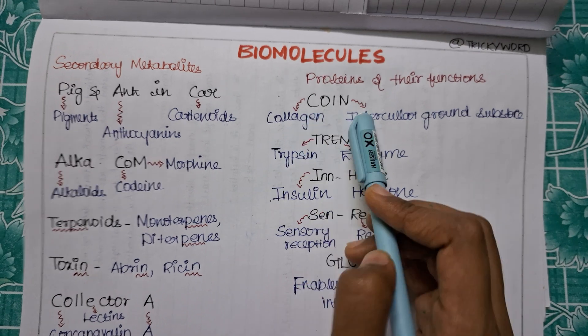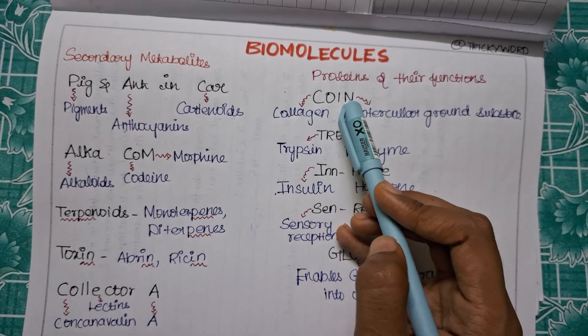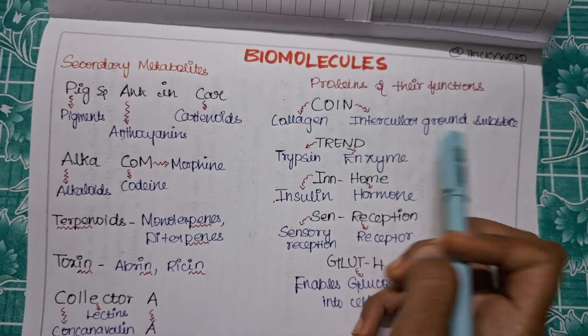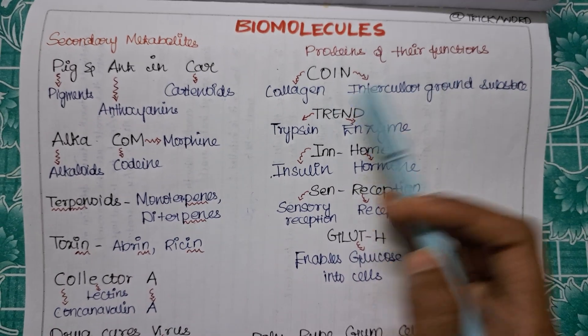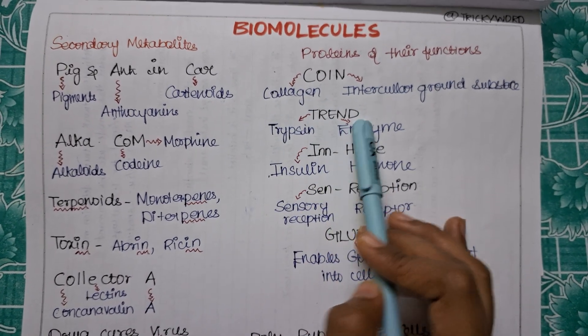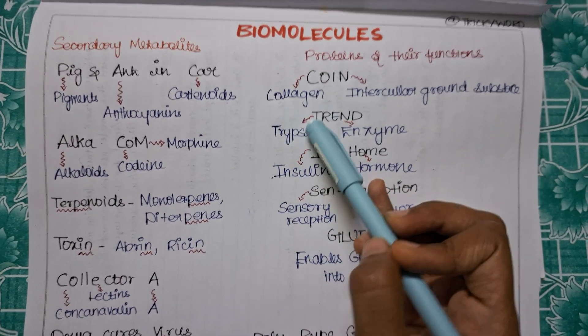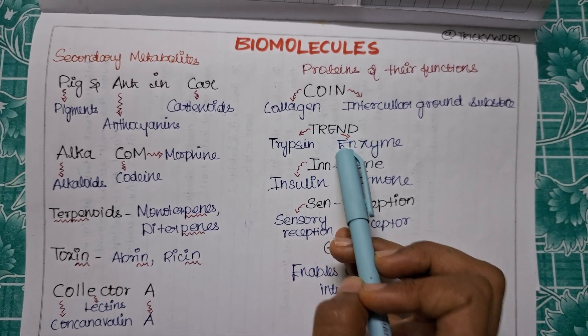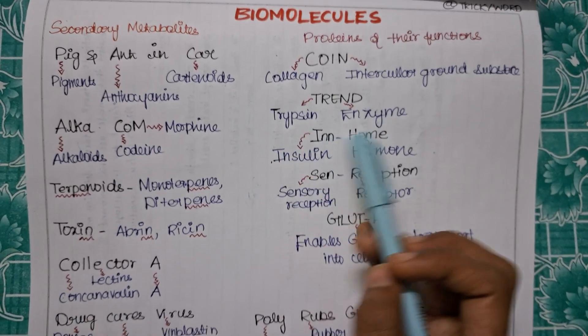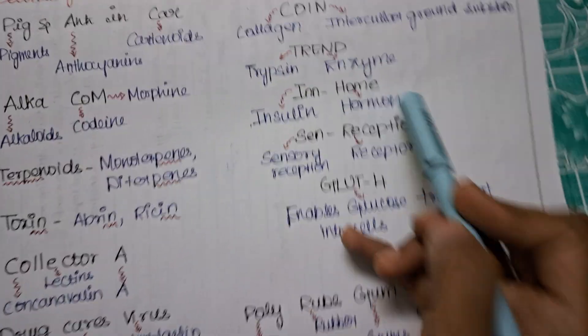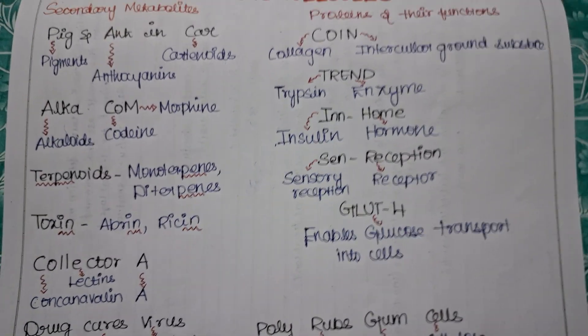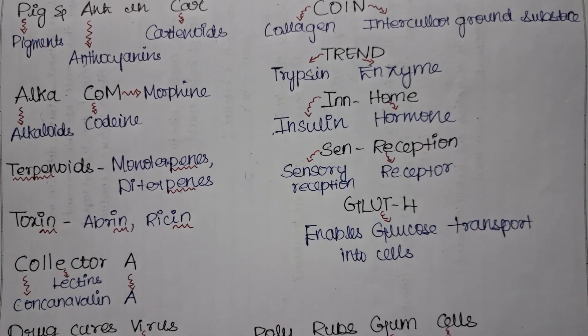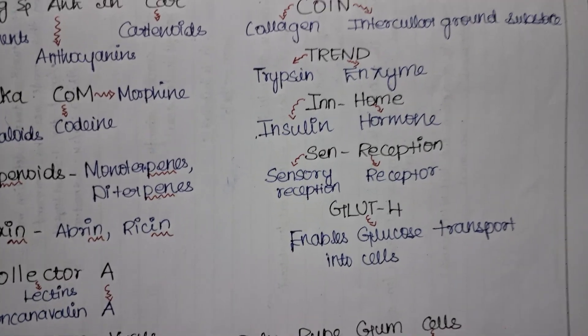I will firstly give you the protein names: collagen, trypsin, insulin, sensory, then is your receptor, then is your GLUT-4. Now COIN - collagen. C for collagen, I-N is for your intercellular ground substance. This acts as your intercellular ground substance. Next is TREND. We are going in a trend. So TREND - TR for your trypsin, EN for your enzyme. Trypsin as enzyme.